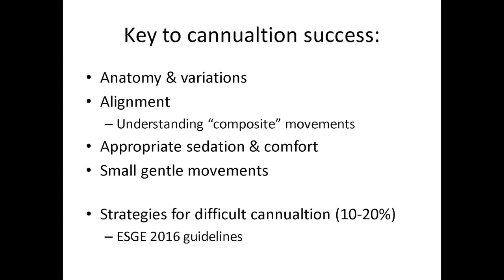The keys to cannulation success of the common bile duct are: understanding the potential changes in anatomy and the normal variations you may encounter; getting good and correct alignment of the sphincterotome with the intra-duodenal portion of the common bile duct — this is often aiming up towards the 11 o'clock position and often requires composite movements of the endoscope controls. We need to make sure the patient has had appropriate sedation and is comfortable, and that we use small, gentle movements when moving around the papilla to maximise our approach and success. There is a document recently published looking at strategies for difficult cannulation, which are encountered in around 10 to 20% of cases.